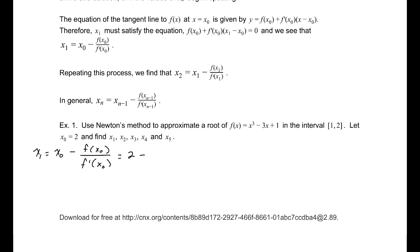That is 2 minus f of 2. For f of x equals x cubed minus 3x plus 1, and the derivative is 3x squared minus 3. So f of 2 is 3, and f prime at that same point is 9. So that gives us 2 minus 3 over 9, which is 2 minus one third, giving us 5 thirds.